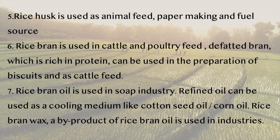Rice husk is used as animal feed, in paper making and as a fuel source. Rice bran is used in cattle and poultry feed. De-fatted bran, which is rich in protein, can be used in the preparation of biscuits and as cattle feed. Rice bran oil is used in the soap industry. Refined oil can be used as a cooling medium like cottonseed oil or corn oil. Rice bran wax, a by-product of rice bran oil, is used in industries.